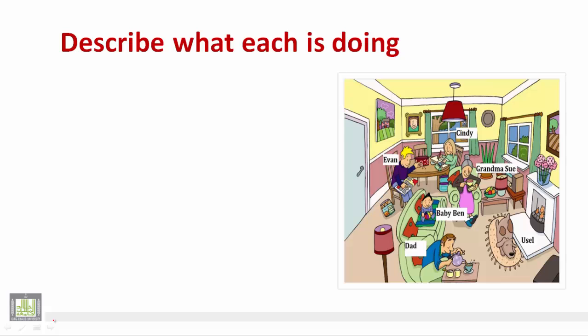Let's start to describe some of them. Let's start, for example, with dad. What is dad doing? Okay, we say: dad, of course is, because it's singular, is pouring tea.